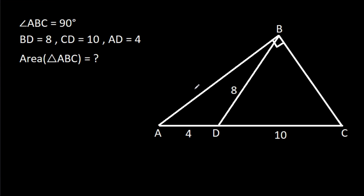In this video, we have been given that angle ABC is 90 degrees, BD is 8, CD is 10, and AD is 4. Then we have to find the area of triangle ABC.